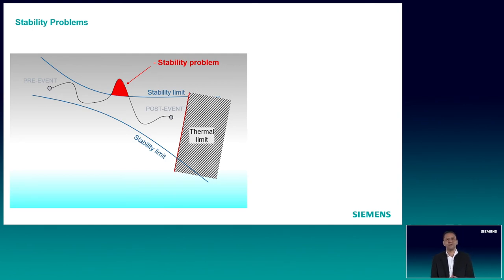But it could also be solved with Wide Area Protection schemes that can save the integrity of the system. Here in the slide, I show the different kinds of stability problems that we can find in power systems, like transient stability, voltage stability, or small signal stability.